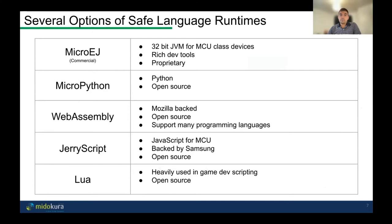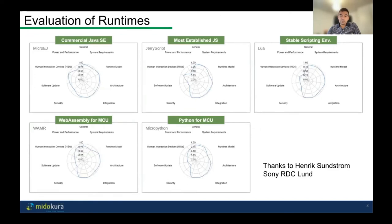We looked at several options for safe execution runtimes. We looked at MicroEJ, a commercial option based on Java — a 32-bit JVM for MCU devices. We looked at MicroPython, WebAssembly, JerryScript (basically JavaScript), and Lua. My colleague Henrik Sundström at the Sony Research Center in Lund, Sweden did an evaluation based on criteria like power and performance, general system requirements, runtime model, ease of integration, security, software update model, and HID support. We decided to go with WebAssembly.